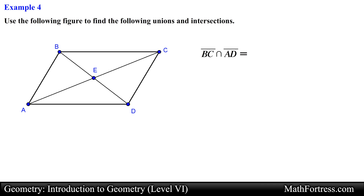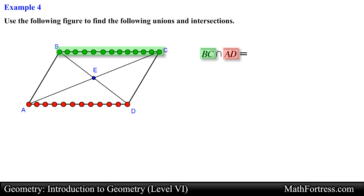Here we need to find the intersection of line segment BC and line segment AD. The set of all points associated with line segment BC and those associated with line segment AD are shown in the figure. Notice that none of the points of either line segment BC or line segment AD intersect, meaning there are no points that both line segments have in common. This results in an empty set, which is represented by the empty set symbol.